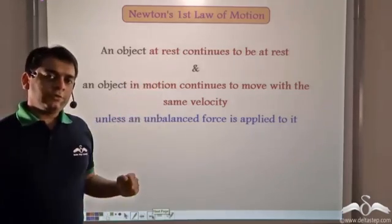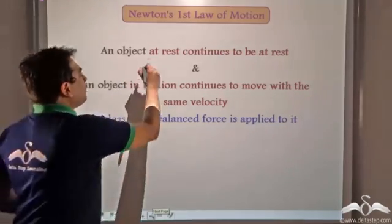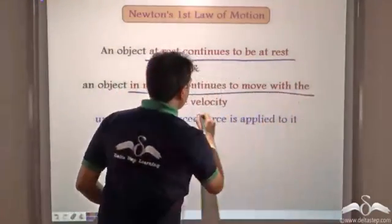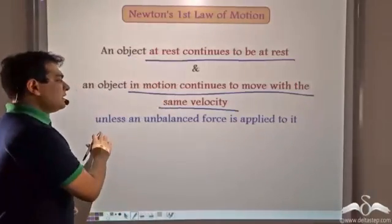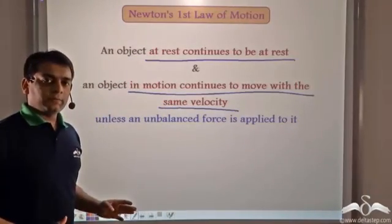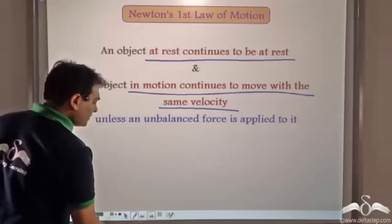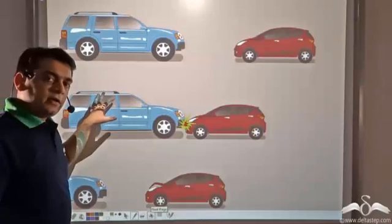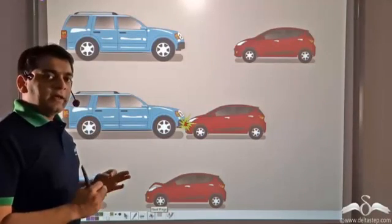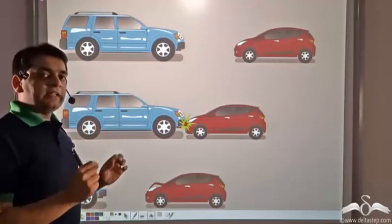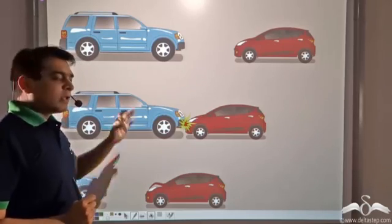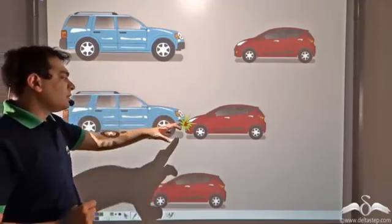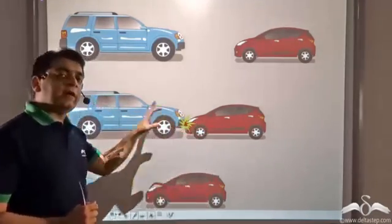From Newton's first law of motion, we know that an object at rest continues to be at rest, and an object in motion continues to move with the same velocity unless an unbalanced force is applied to it. Now in our previous case we had two cars. So according to Newton's first law, the parked car would have continued to be at rest if an unbalanced force did not act upon it. So what was the unbalanced force that acted on the parked car so that it moved? It was the force exerted by the speeding car on the parked car.